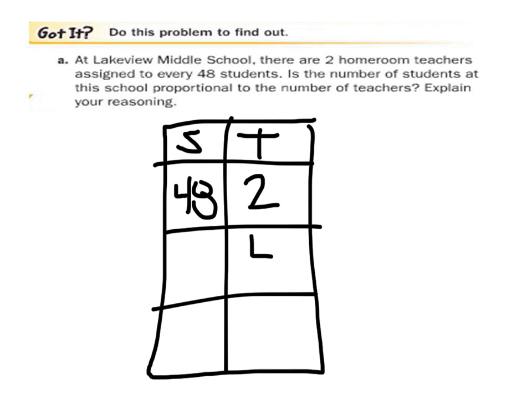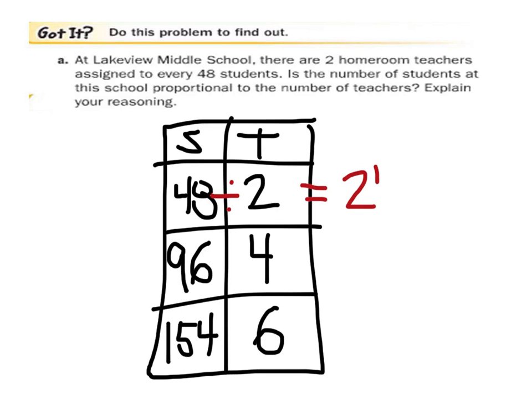What if I have four teachers? 96. What if I have six teachers? 144. Is this proportional? Well, let's divide. 48 divided by 2 is 24. 96 divided by 4 is 24. 144 divided by 6 is 24. So this one, as it turns out, is proportional.